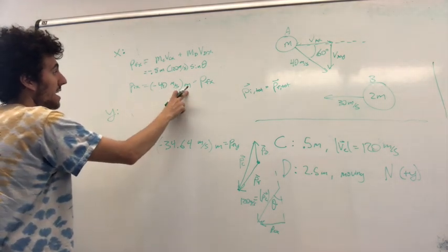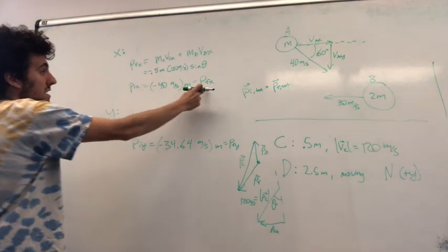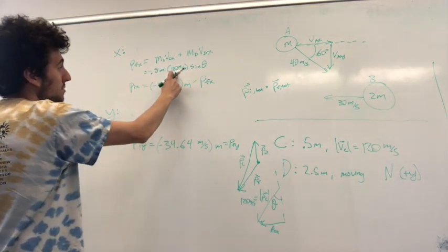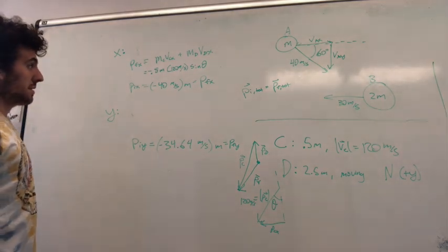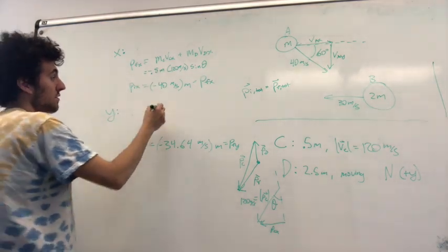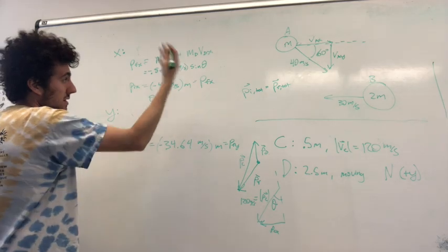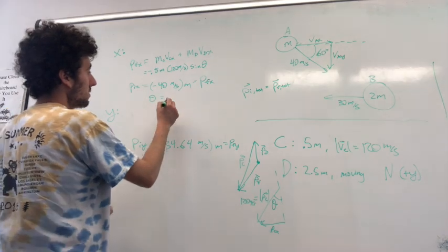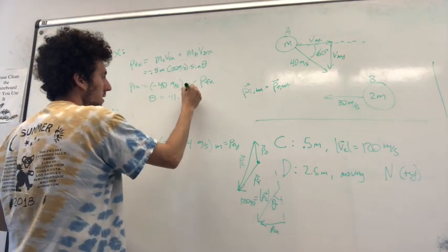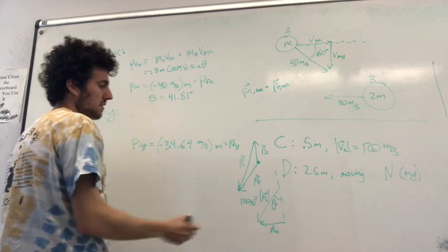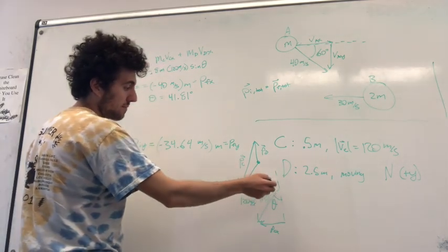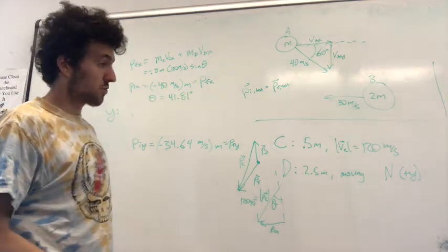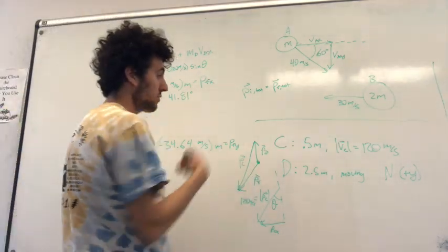So now this is a complete equation. We have negative 40 meters per second times M is equal to PFX, or PFX is also equal to negative 0.5M times 120 meters per second sine theta. So the M's cancel, and we can just solve for theta. I was going to use an inverse sine and stuff, so I won't do the actual calculation out here. It comes out to 41.81 degrees. So that's the angle between the momentum vector of C and the negative y-axis. So there, we found the direction of C, which was one of our objectives.